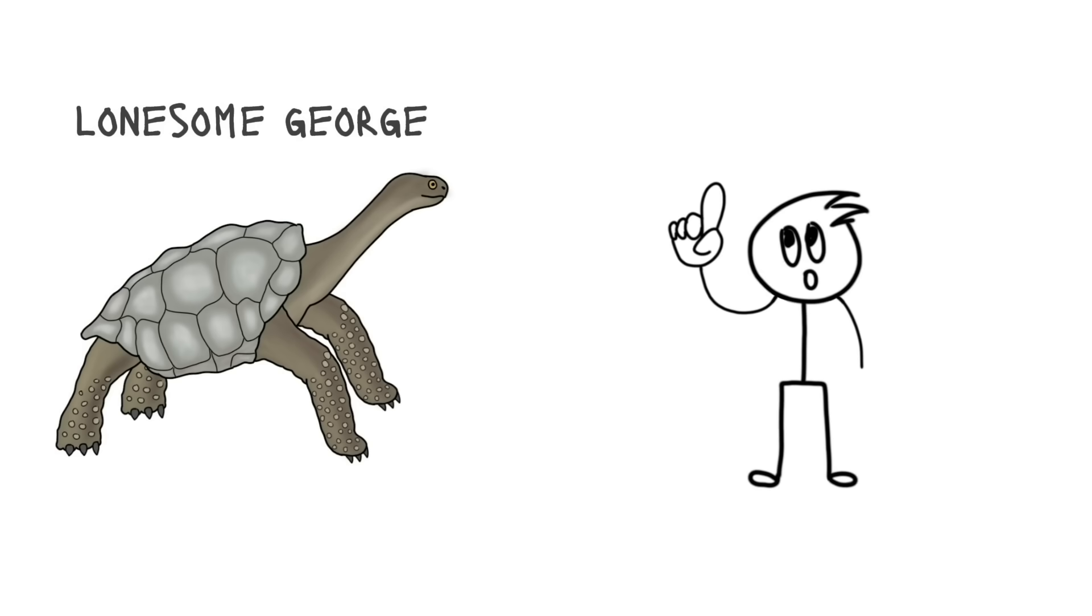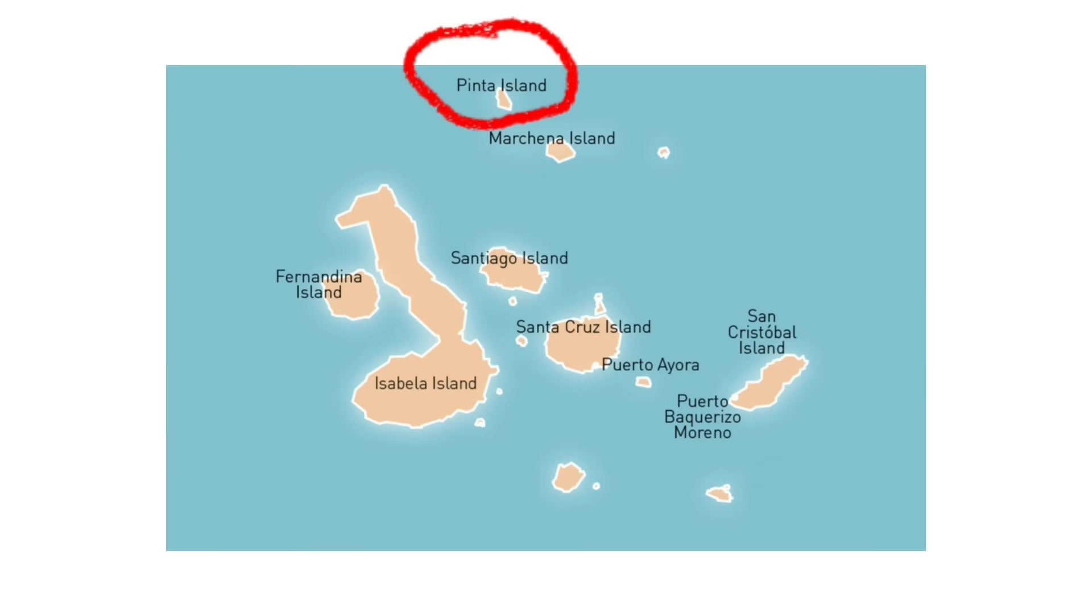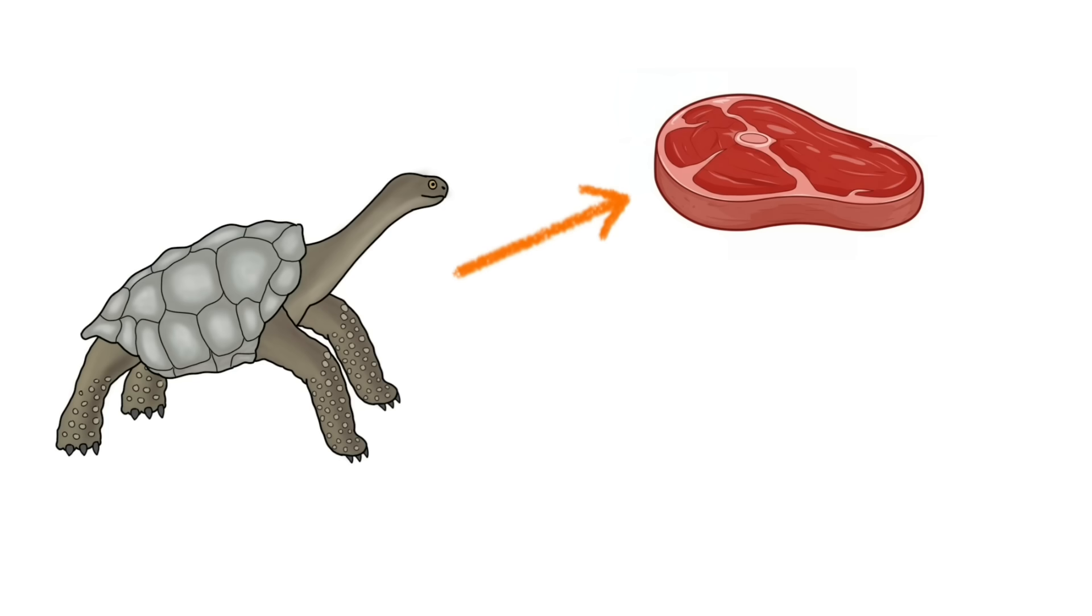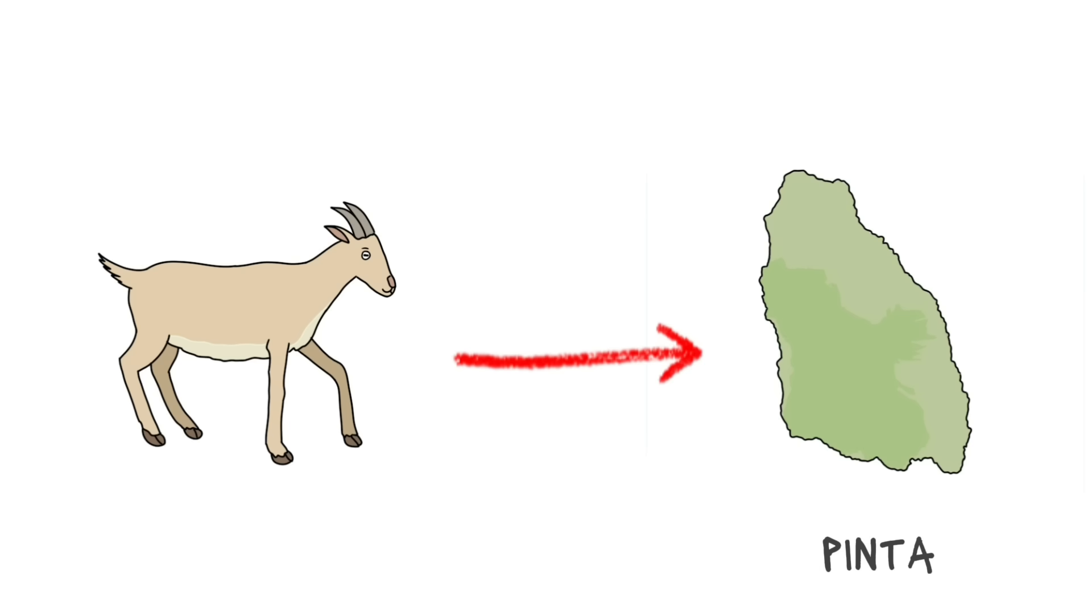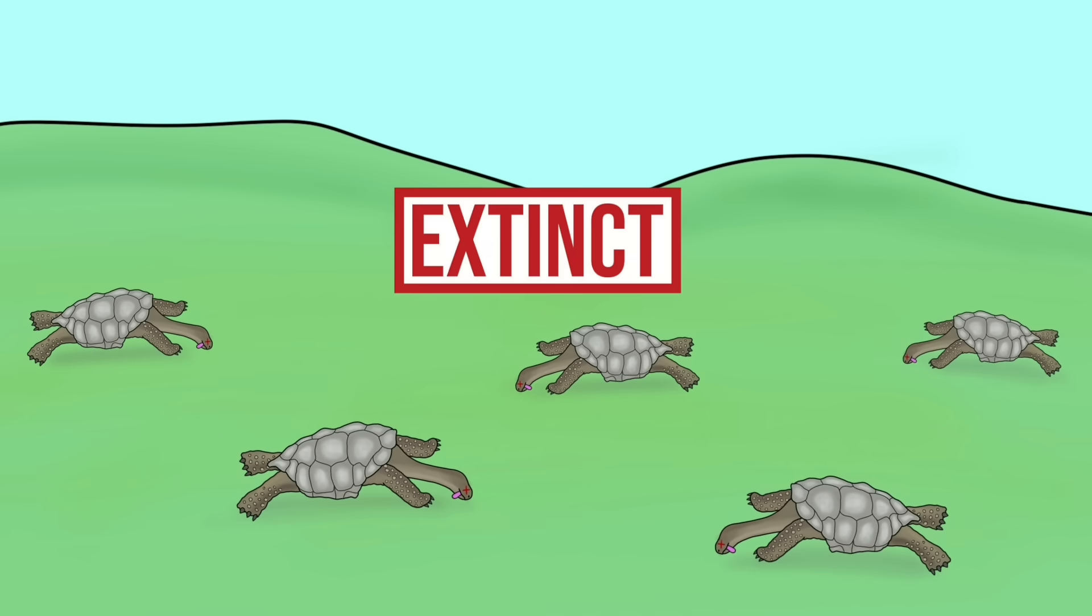This was Lonesome George, and he was the last remaining member of Pinta Island Tortoise. There used to be a lot of tortoises on the island of Pinta, but humans used to hunt them for food and oil. After goats were introduced to the island, they ate all the grass, and no food was left for the tortoises to eat. So the species was believed to be extinct.